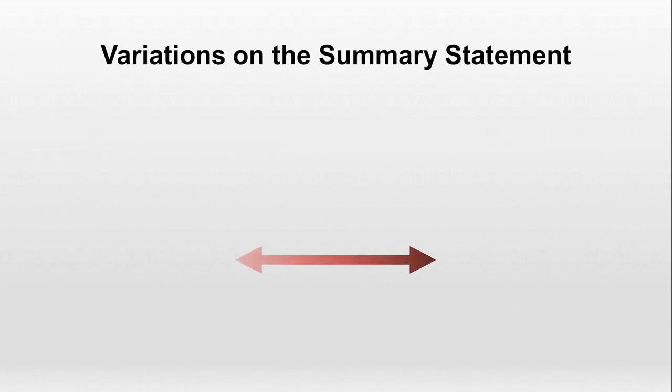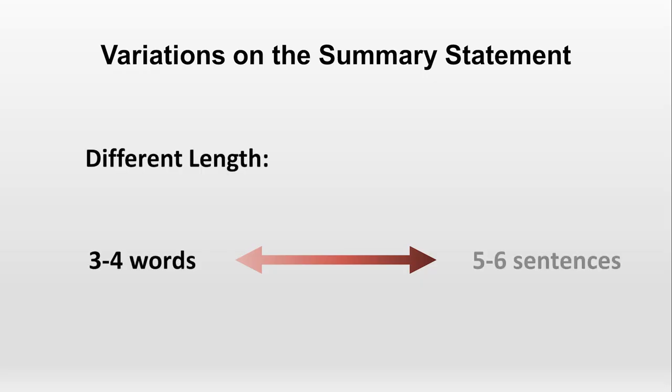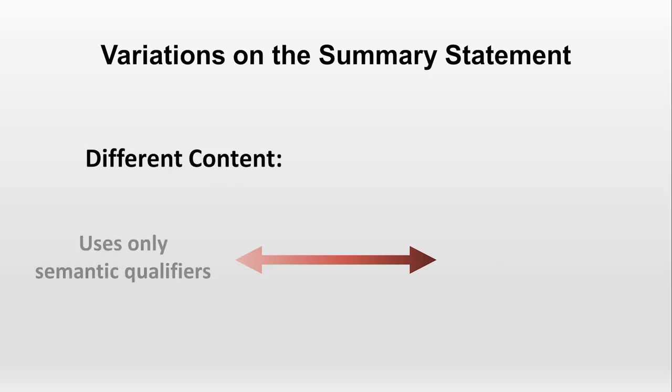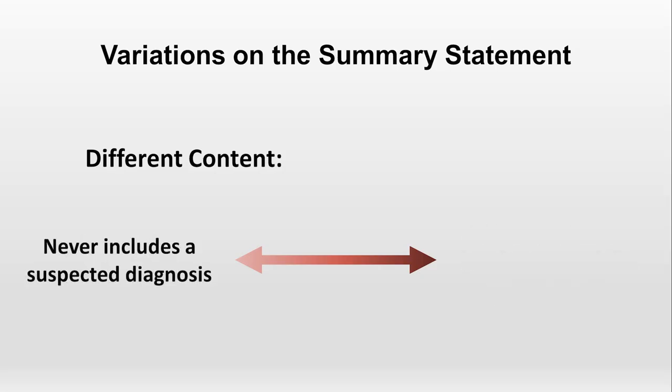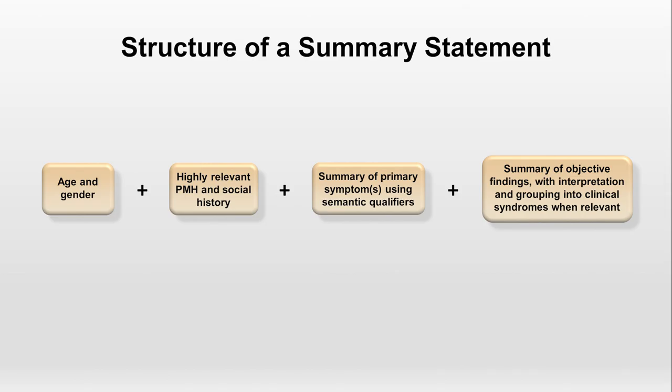Throughout your training you will encounter many variations on the summary statement and many different opinions about it. They can vary in length from 3–4 words to 5–6 sentences, in content from using only semantic qualifiers to relisting most key features, and from never to always including a suspected diagnosis. The format presented here does the best job at splitting the difference, providing a concise yet informative summary that aids rapid communication and clinical reasoning. A useful rule of thumb: if your listener missed the entire preceding presentation and only heard your summary statement, they should still be able to deduce your top diagnosis.